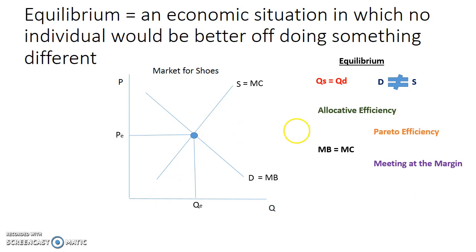When talking about equilibrium, you could also talk about Pareto efficiency. Pareto efficiency means that one party's situation cannot be improved without making another party's situation worse. It's also known as Pareto optimality, an economic state where resources are allocated in the most efficient manner.